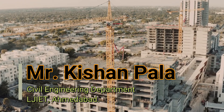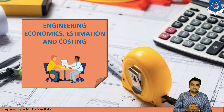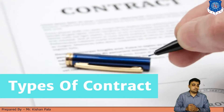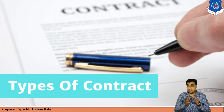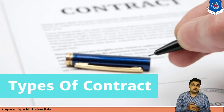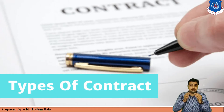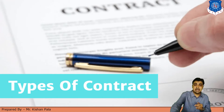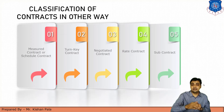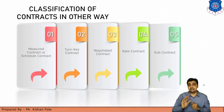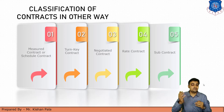This is a production of WGBH. Hello viewers, in this session we will discuss about types of contracts. We already discussed about 12 types of contracts used in construction. We can also classify contracts in another way — in 5 ways.